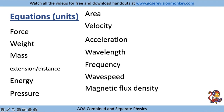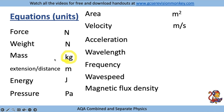The units you need to be aware of for Physics Paper 2: force is newtons (capital N), weight is also newtons (because weight is a force), mass is kilograms — the only time you leave the kilo prefix — extension and distance are metres, energy is joules, pressure is pascals, area is metres squared, velocity is metres per second, acceleration is metres per second squared, wavelength is metres, frequency is hertz, wave speed is metres per second, and magnetic flux density is teslas.